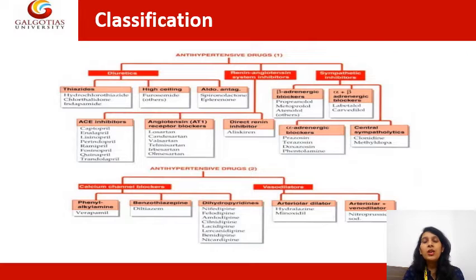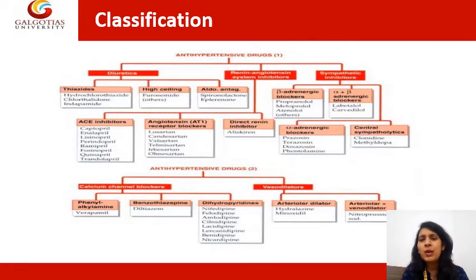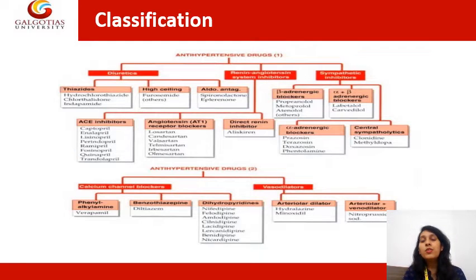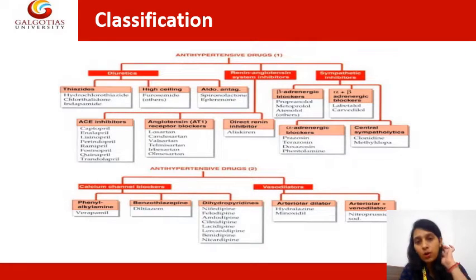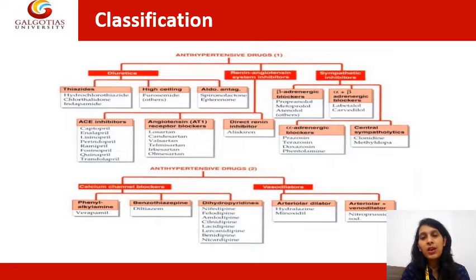Here is the classification for the sympathetic inhibitors used as antihypertensive drugs. The first one is beta-adrenergic blockers. The drugs in this category are propranolol, metoprolol, and atenolol. The second one is alpha plus beta adrenergic blockers.